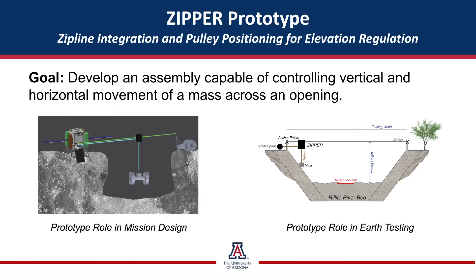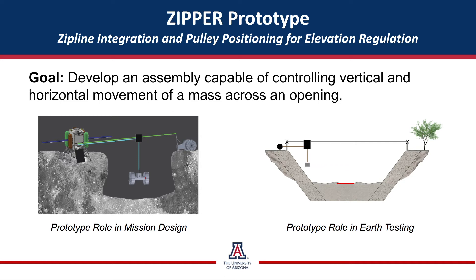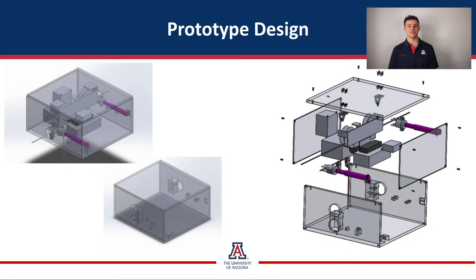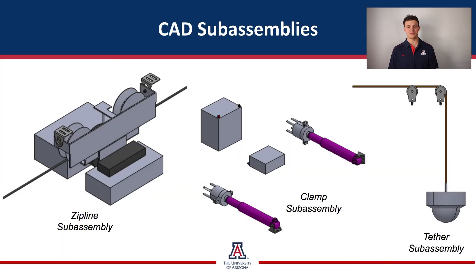The goal of our prototype is to allow for vertical and horizontal translation of a payload across an opening. On the moon this process will occur over the skylight of a lunar lava tube, but our prototype will be tested over the dry riverbed of the Riyito River. The prototype consists of four subsystems: a modular box shell that houses all other components and whose panels may be removed for construction and visibility of the interior components, along with the zipline, clamp, and tether subassemblies.